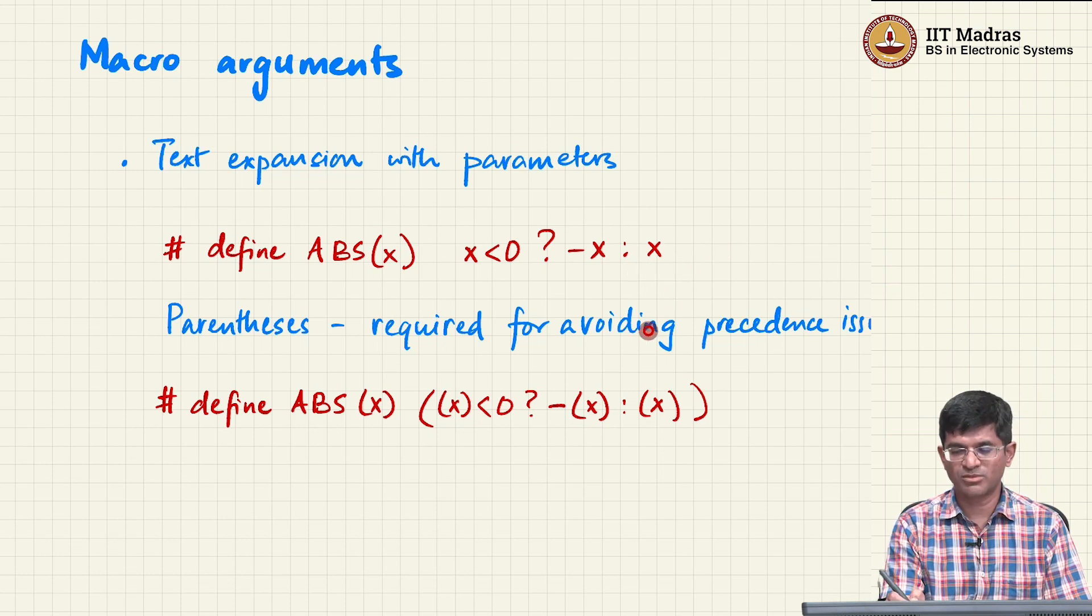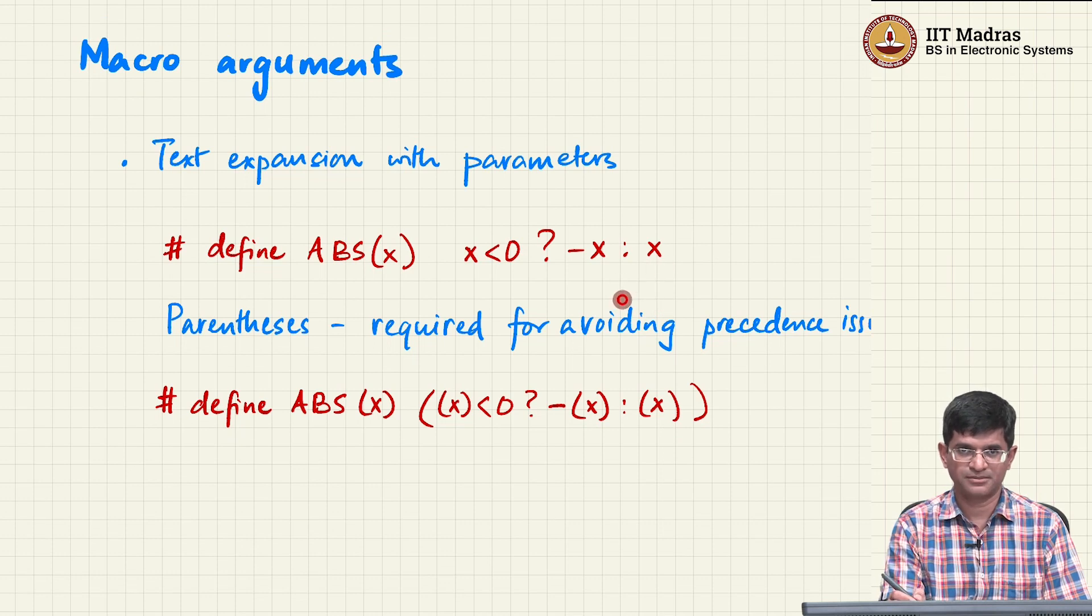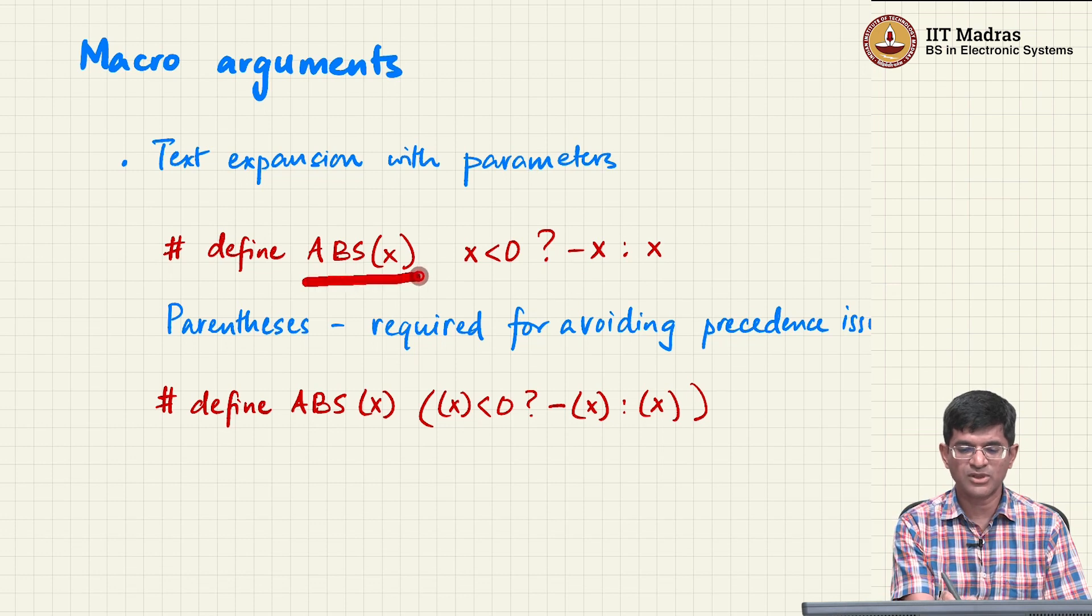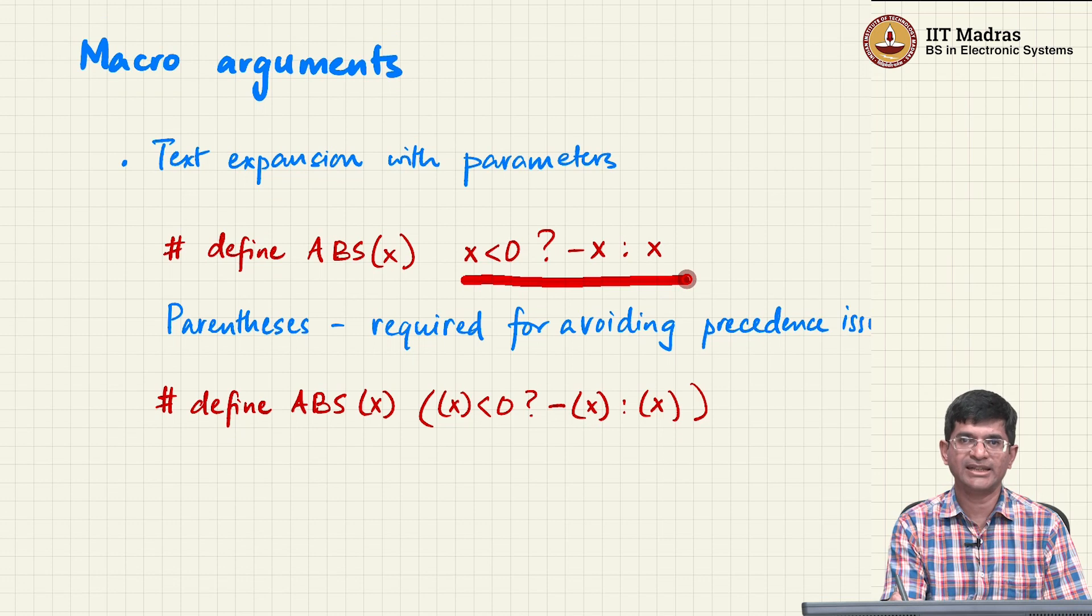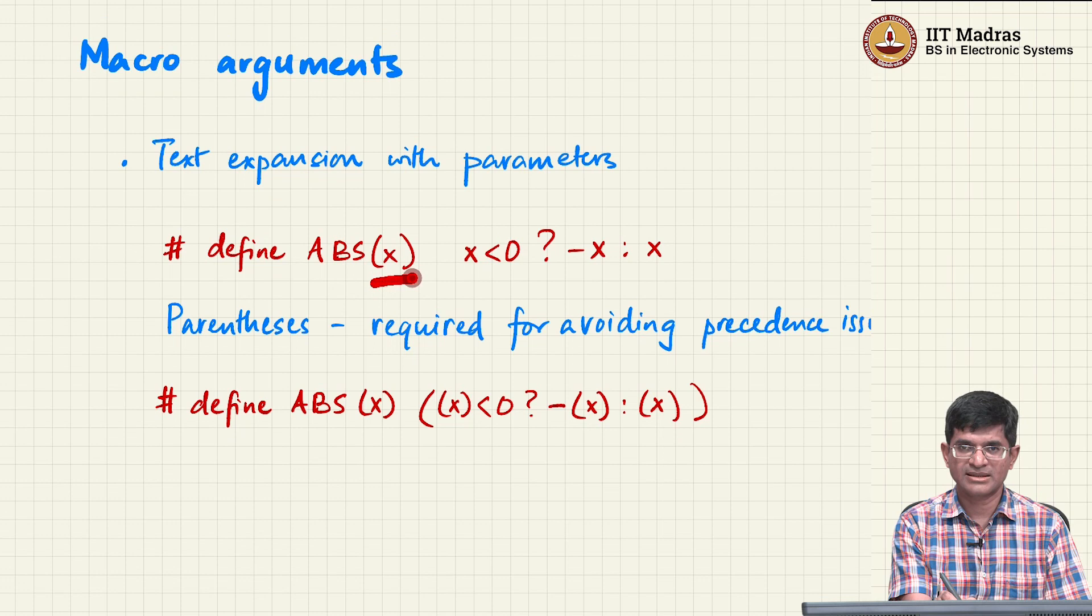A couple of things to observe here: there is no semicolon at the end, this is not an actual statement. By itself, all that will happen is whenever ABS(x) occurs, it will be replaced with this text exactly as it stands. The only interesting thing is x will be replaced by whatever it is that you actually want, that you actually put in there when you are calling this macro.